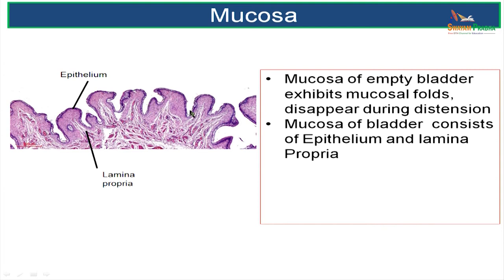When the bladder gets distended with urine, the mucosal folds will disappear. Mucosa consists of transitional epithelium and underlying lamina propria.